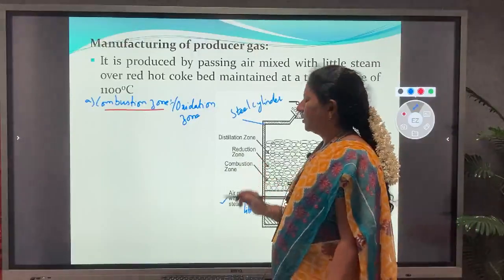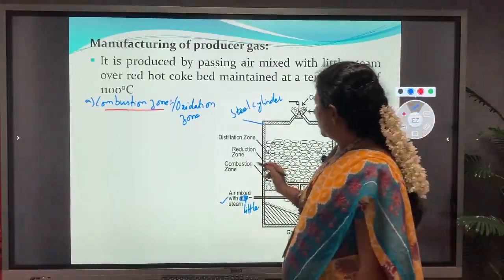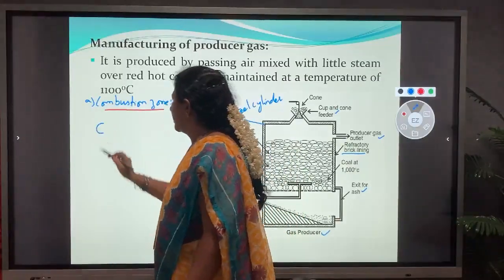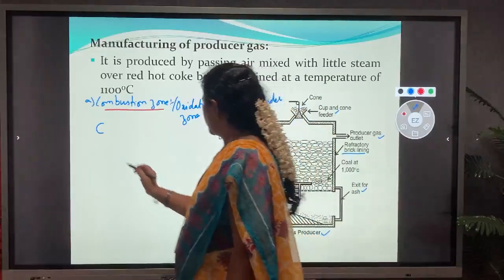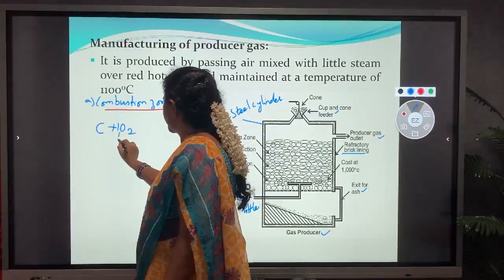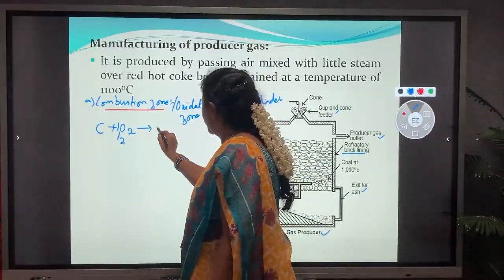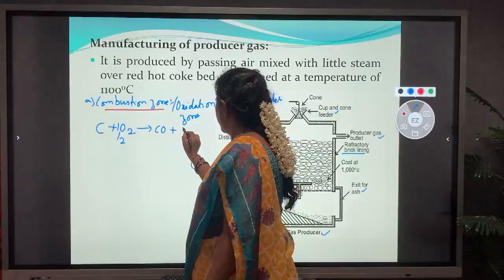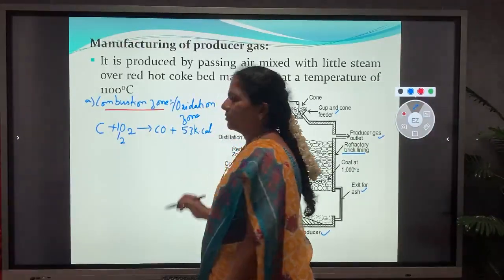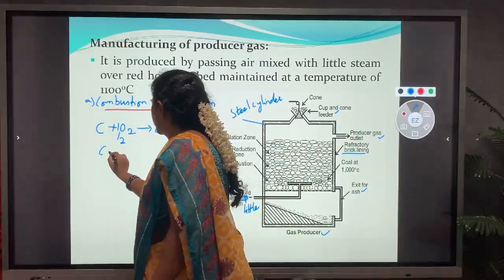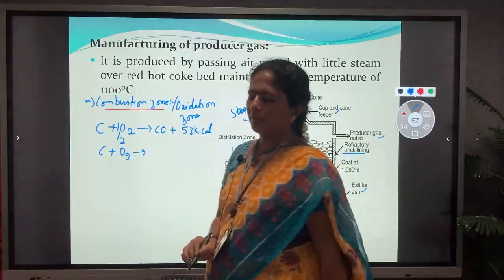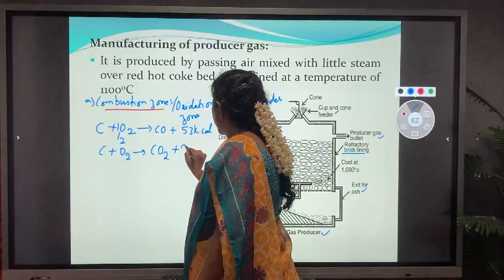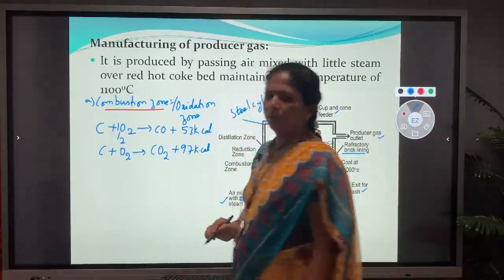In the combustion zone, coal burns and forms carbon dioxide and carbon monoxide. The red hot coke burns with oxygen: C + ½O₂ → CO + 53 kcal, and C + O₂ → CO₂ + 97 kcal. The temperature of this combustion zone is 1100 degrees centigrade.